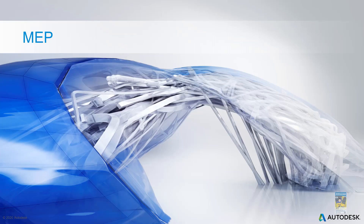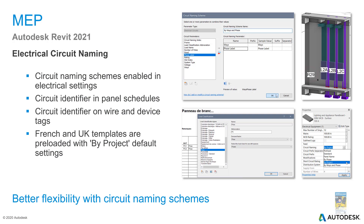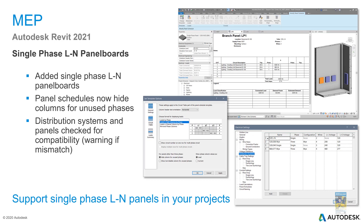From the MEP perspective, Revit 2021 introduces electrical circuit naming, enabled in the electrical settings dialog box. Circuit identifiers appear in panel schedules so you can see what circuit each item is tied to — same for wire and device tags. Templates for France and UK are pre-loaded. Single-phase LN panel boards have been added, and panel schedules now hide columns for unused phases.